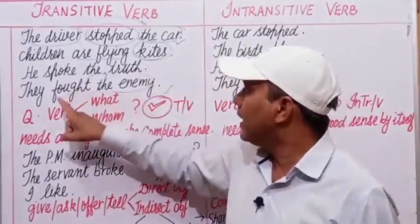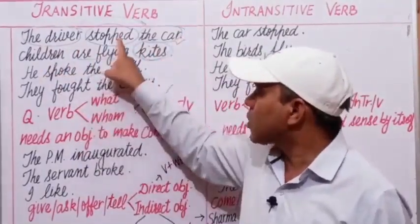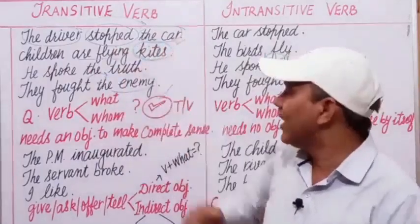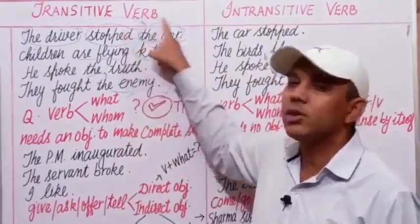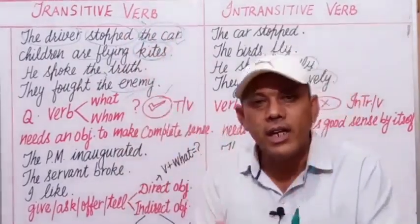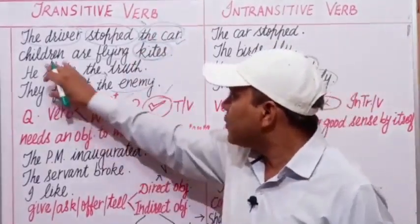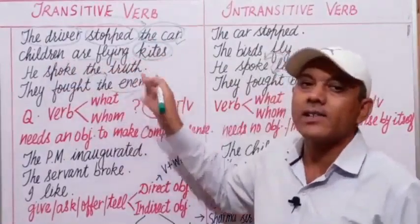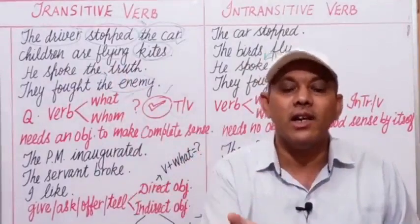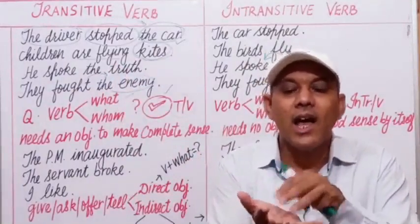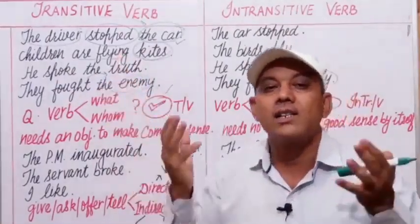Let us try: 'The driver stopped the car' — stopped what? The car. We get the answer, so the verb is transitive. 'Children are flying kites' — flying what? Kites. We get the answer, so the verb is transitive. 'He spoke the truth' — spoke what? The truth. 'They fought the enemy' — fought whom? The enemy. In each case we get an answer as an object, so the verb is used as a transitive verb.